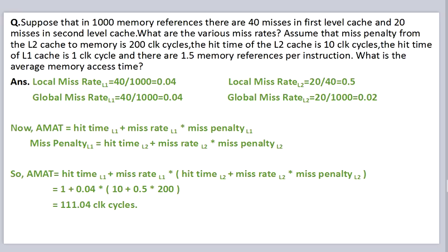Average memory access time equals hit time of L1 plus miss rate of L1 into miss penalty of L1, where miss penalty of L1 equals hit time of L2 plus miss rate of L2 into miss penalty of L2. Hit time of L1 is 1 clock cycle; miss rate of L1 is 0.04; hit time of L2 is 10 clock cycles; miss rate of L2 is 0.04 (local miss rate of L2), multiplied by miss penalty of L2 which is 200 clock cycles. Hence the average memory access time comes out to be 1.6 clock cycles.